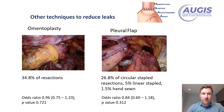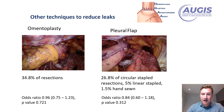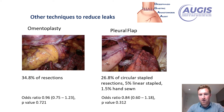We also looked at other anastomotic techniques suggested in the literature to be associated with lower rates of leak or necrosis, including omentoplasty and pleural flap. In our cohort, omentoplasty was performed in about 35% of resections and on unadjusted analysis was not associated with leak or necrosis. Similarly, pleural flap, used in about a quarter of patients with circular stapled anastomosis and fewer in others, was also not associated with leak or necrosis on unadjusted analysis.